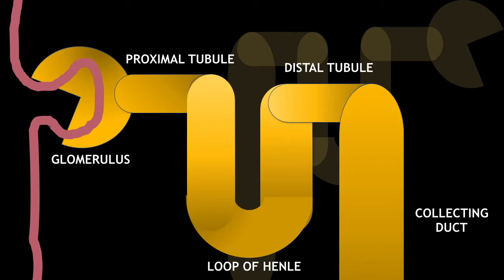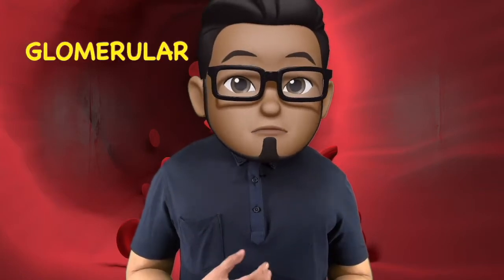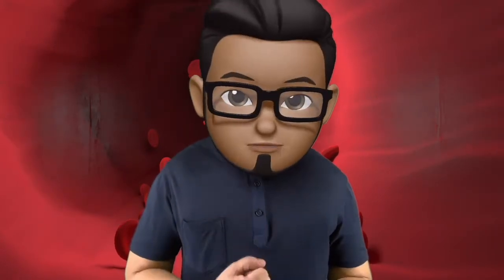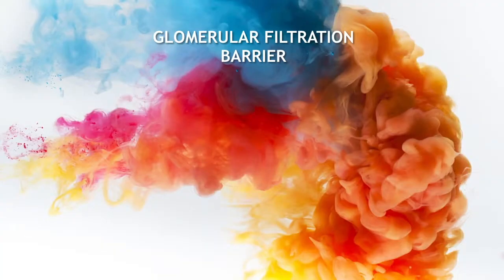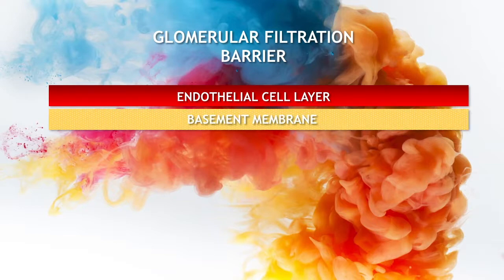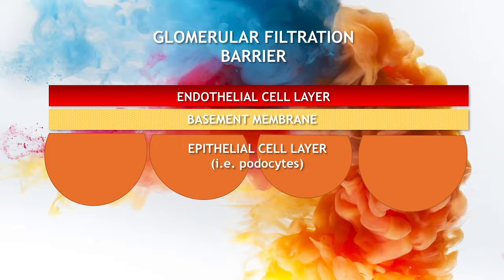Glomerular disorders are very different from tubular disorders in terms of clinical presentation. Glomerular disorders usually present with nephrotic syndrome or nephritic syndrome, and they usually have decreased urine output. This is because of the filtration barrier, an important and integral part of glomerular filtration. The glomerular filtration barrier has three components: your endothelial cell layer, your basement membrane, and your epithelial or podocyte cell layer.